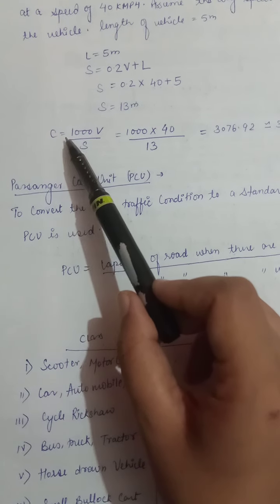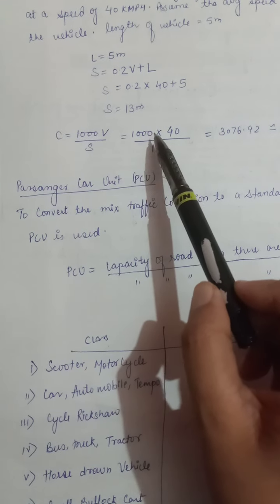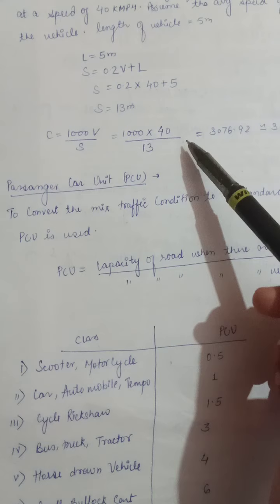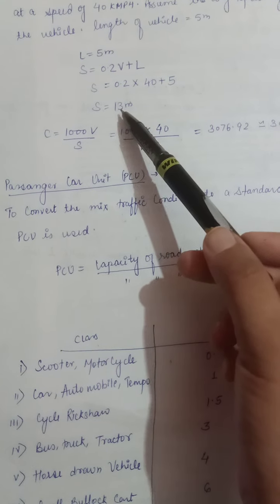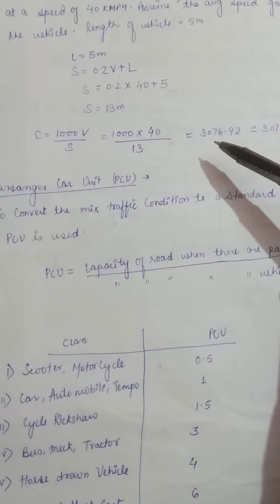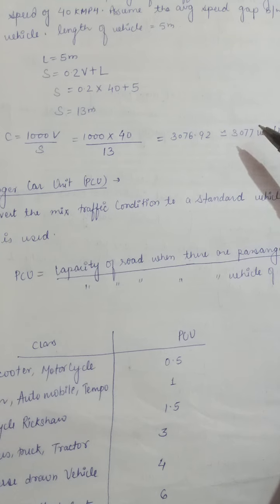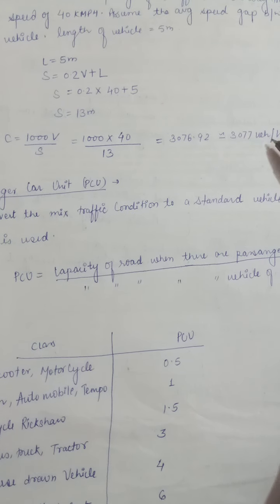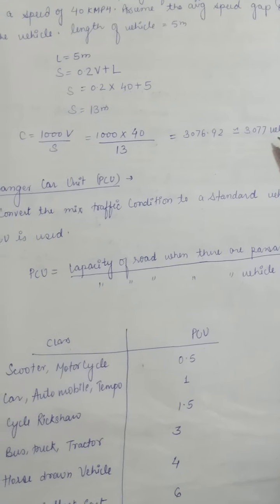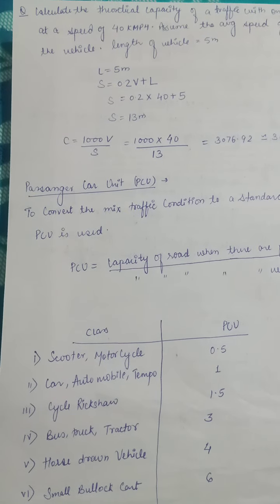Now we calculate theoretical maximum capacity using C = 1000V/S = 1000 × 40 / 13 = 3076.92. Since vehicles must be whole numbers, we round to 3077 vehicles per hour. This is our theoretical maximum capacity.